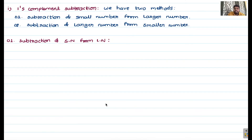Our next topic is one's complement subtraction, and similarly we have two's complement subtraction. Complement forms are used to represent negative numbers, and we use these complement forms to perform subtraction. We will first focus on one's complement subtraction, which has two methods: subtraction of a smaller number from a larger number, and subtraction of a larger number from a smaller number. The same two methods apply to two's complement subtraction.